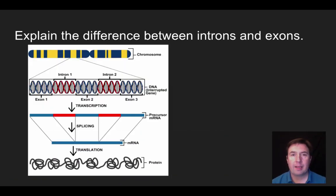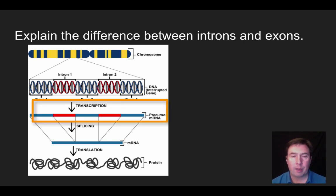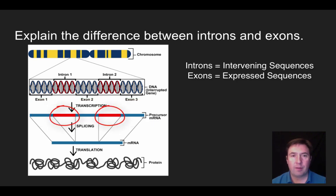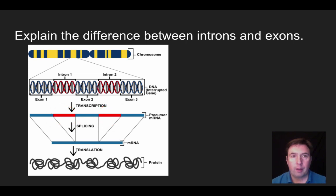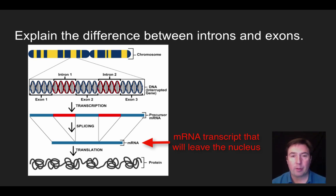When you make the mRNA transcript in a eukaryotic cell, those mRNA transcripts need to be processed. On the chromosome, after transcription, the transcript is really only an mRNA precursor. There are regions of intervening sequences called introns in between the sequences that will be expressed, called exons. Before the mRNA leaves the nucleus, the introns are spliced out, and you are left with the final mRNA product that can then leave the nucleus and head out to make the protein.